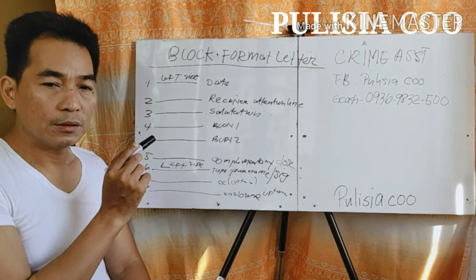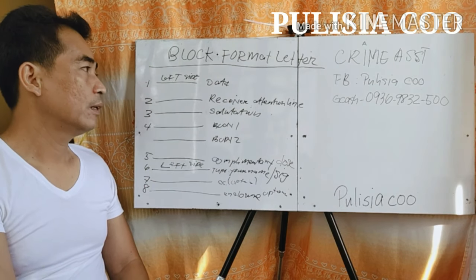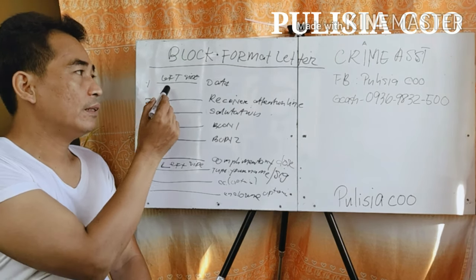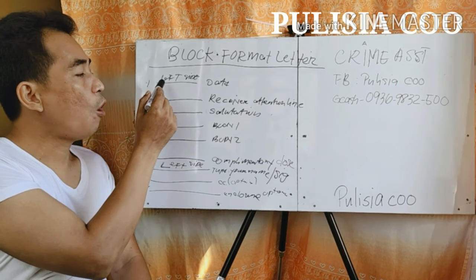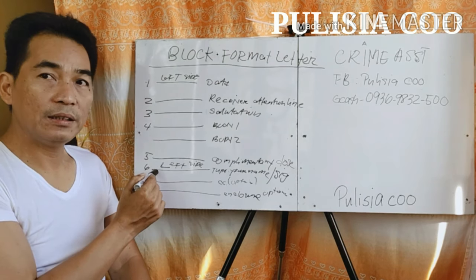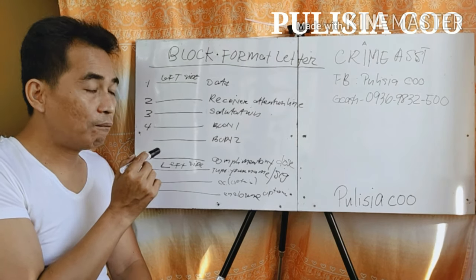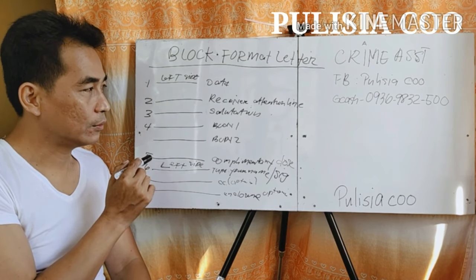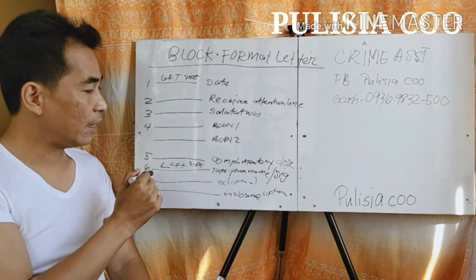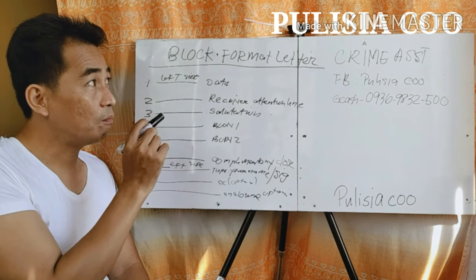Now, some key points about this format. In the block format letter, starting with the date — always take note of the date. When you put the date, it goes on the left side. This is the key indicator of the block format letter: whatever you do, both the date and the signature are on the left side. That is what makes it a block format letter.